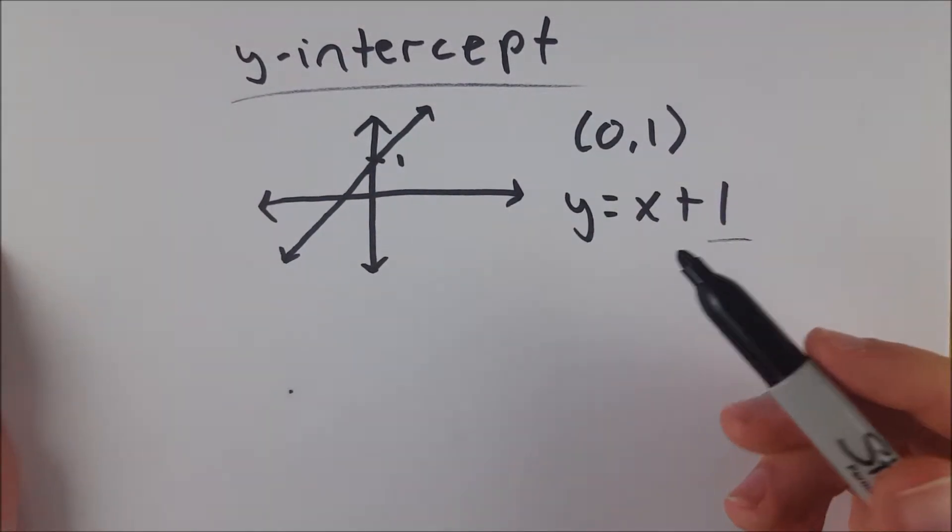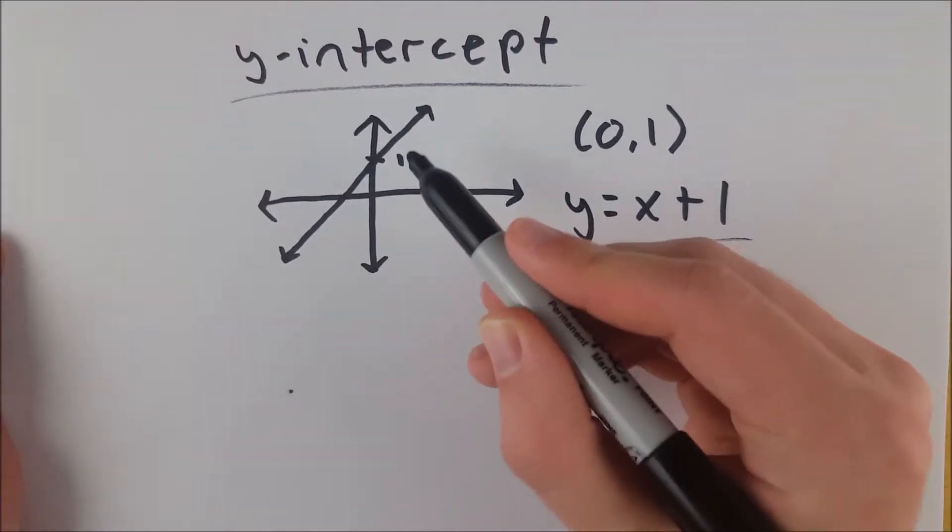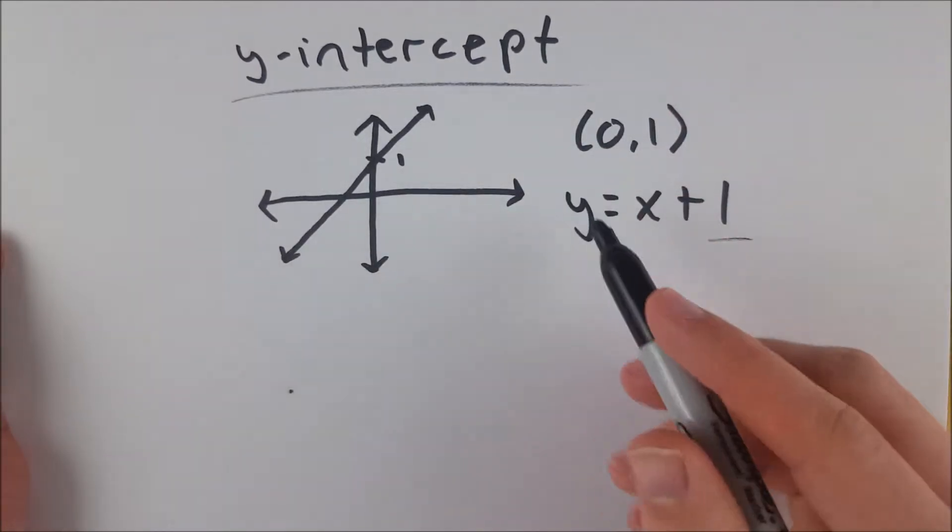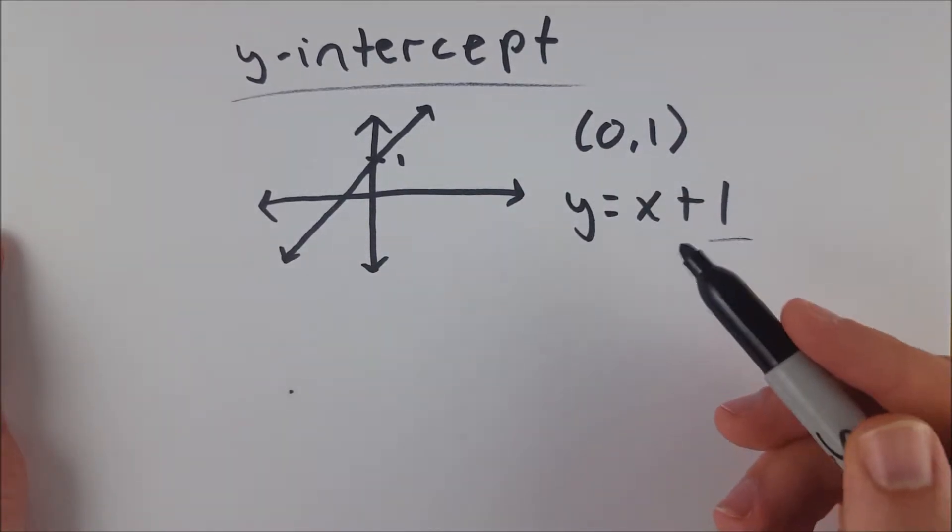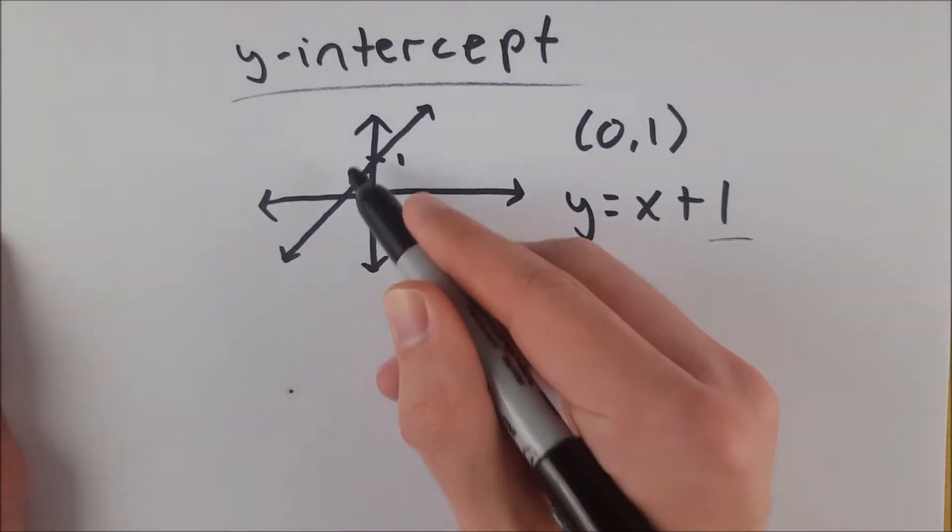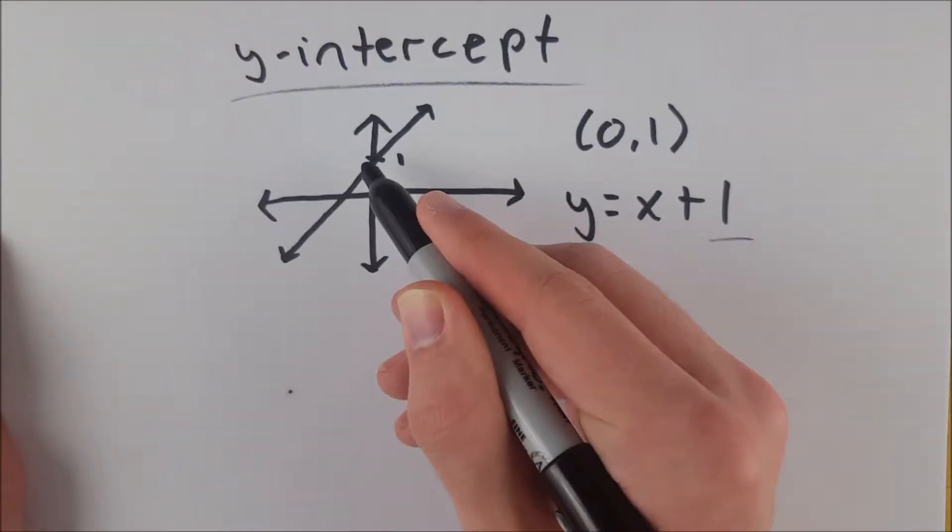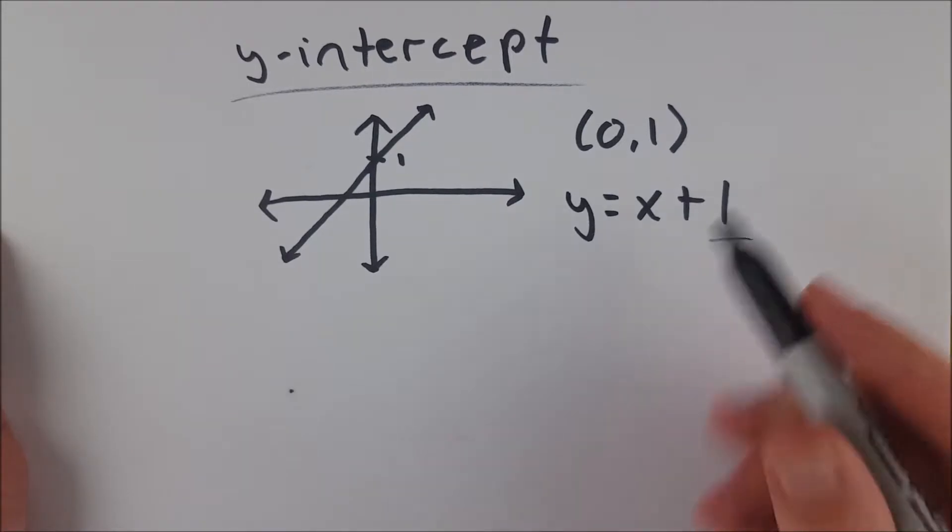What is a y-intercept of a line? Here's a little example. We've got this line here. It could be something like y equals x plus 1, which means that it goes up one unit for every unit it goes over on the x-axis. This is in slope-intercept form.